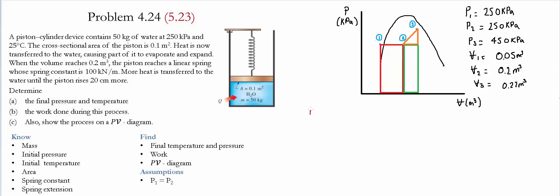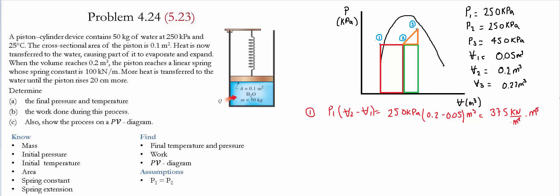Starting with the first area, which is a rectangle: the height is pressure 1 and the base is the difference between volume 2 and volume 1. Substituting values: 250 kilopascals times (0.2 minus 0.05) meter cubed gives 37.5 kilojoules. The units work out as kilopascals times meter cubed equals kilonewton-meters, which equals kilojoules. So the area under the first section is 37.5 kilojoules.